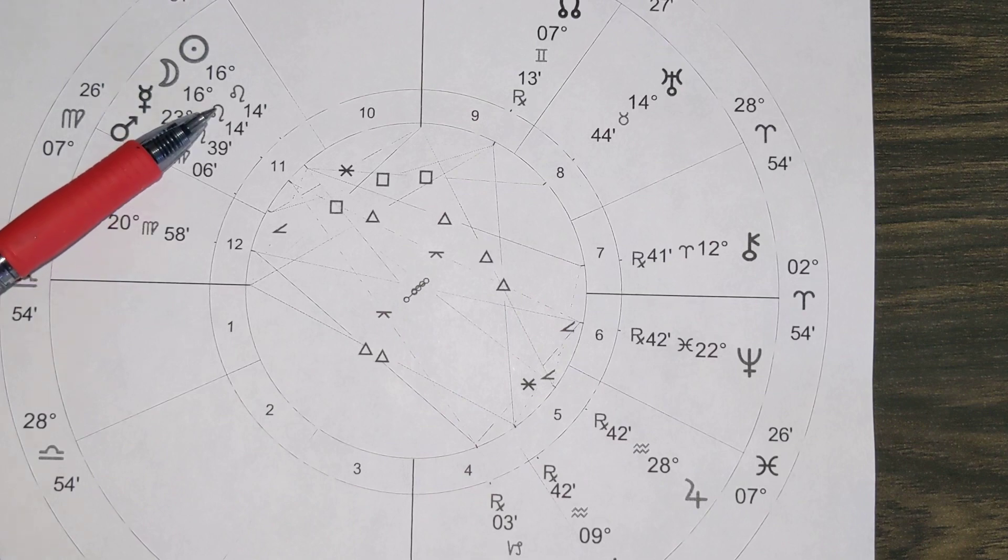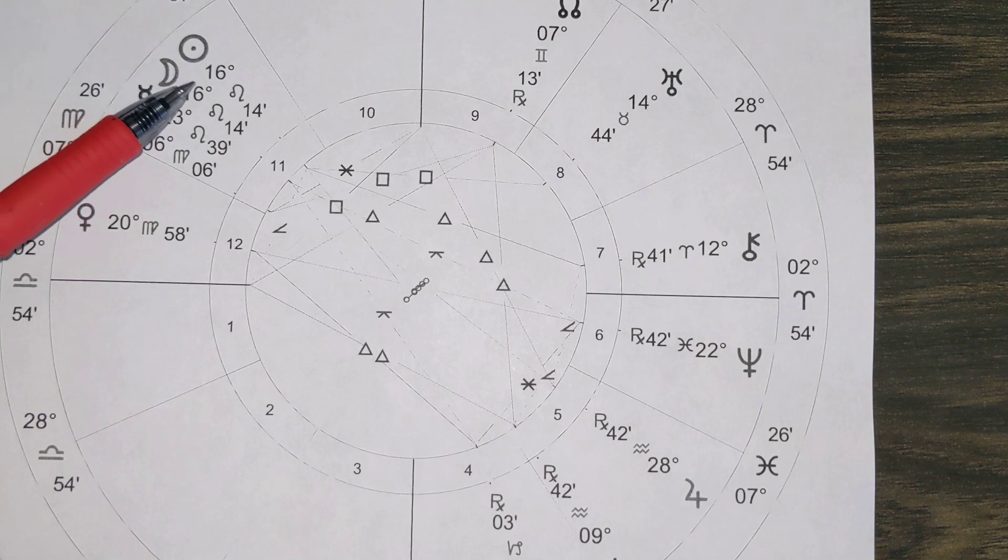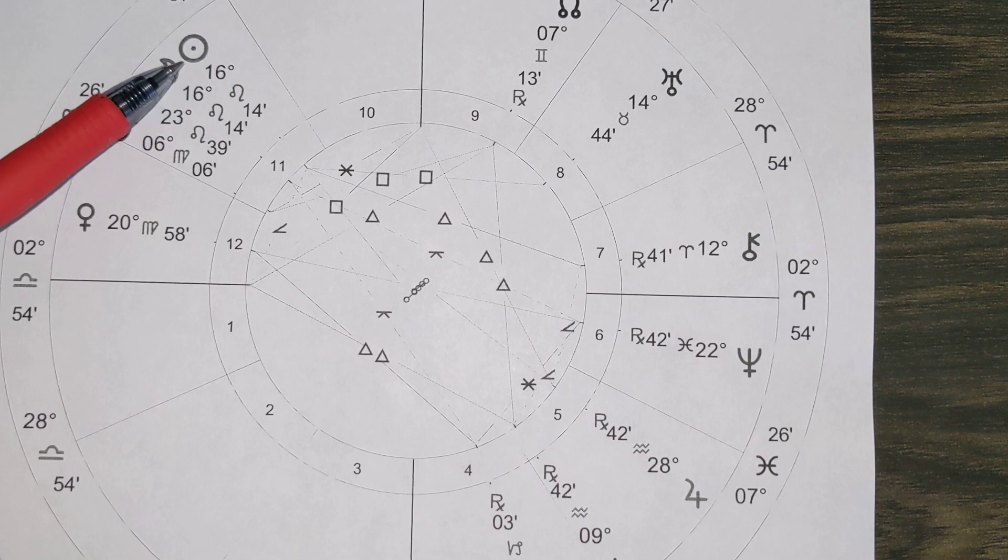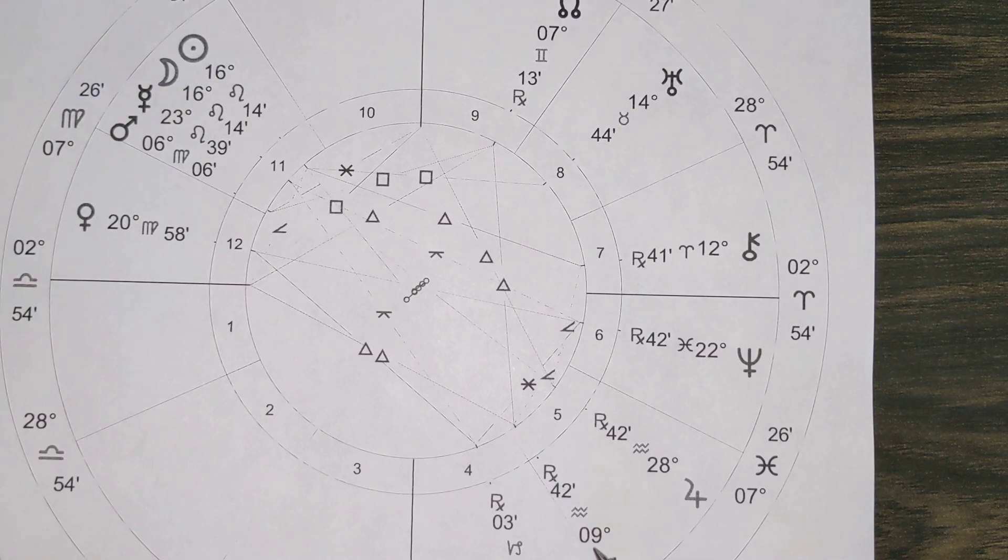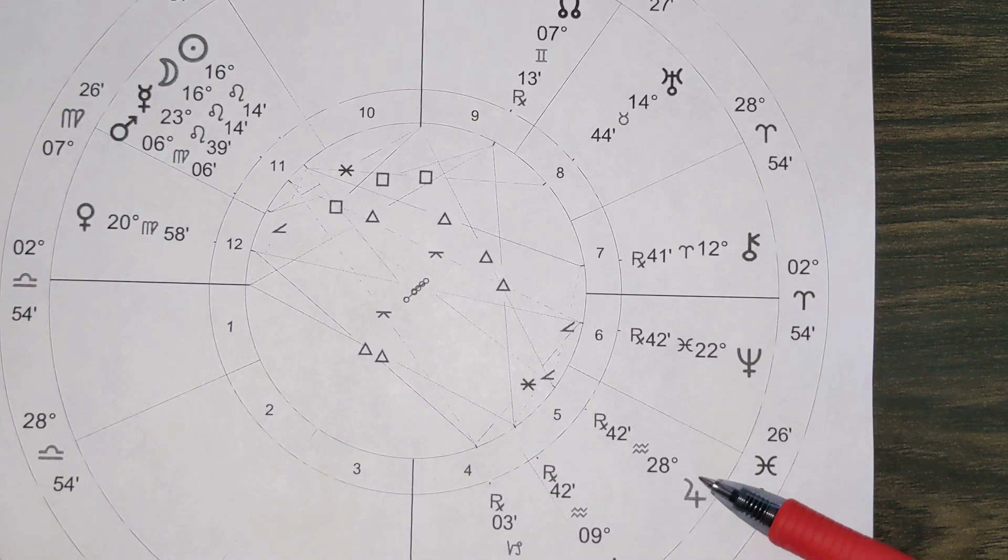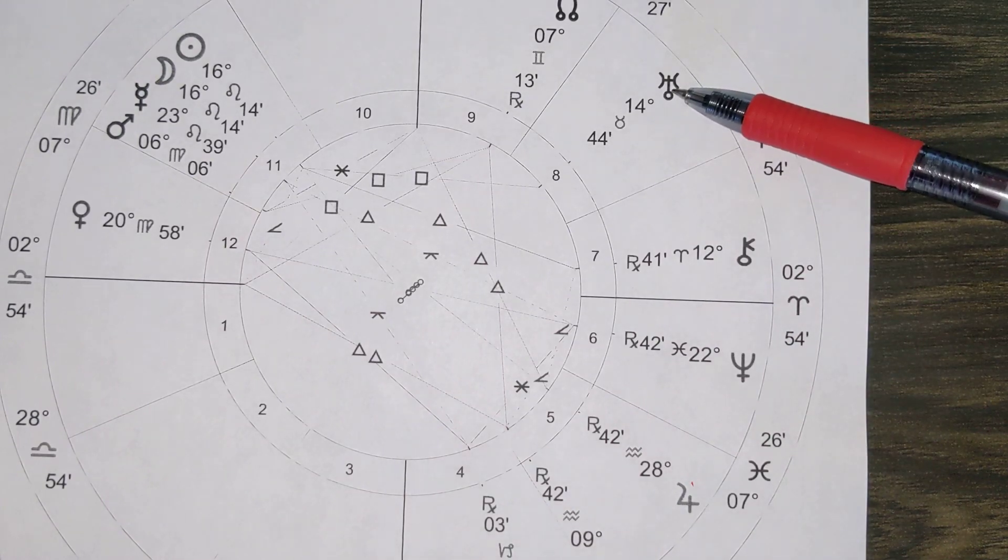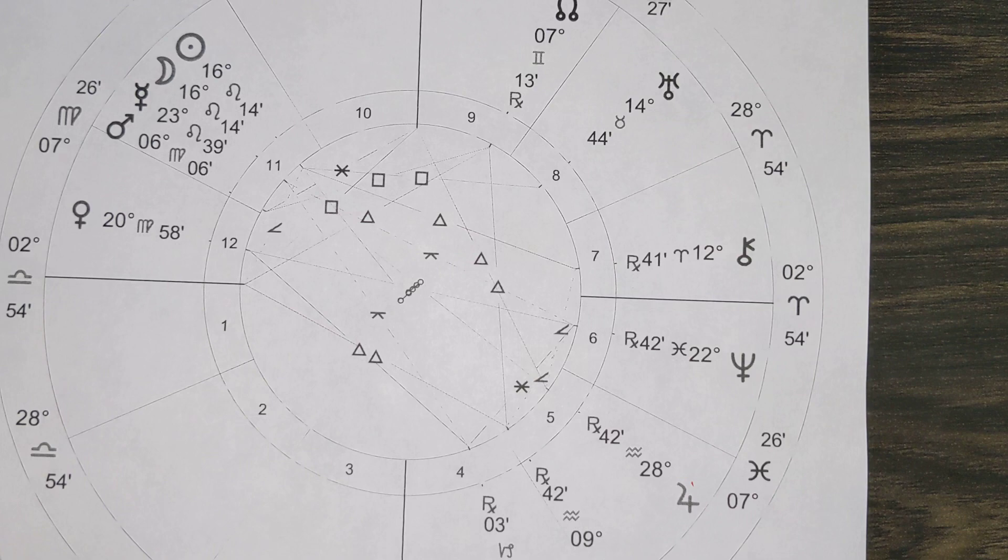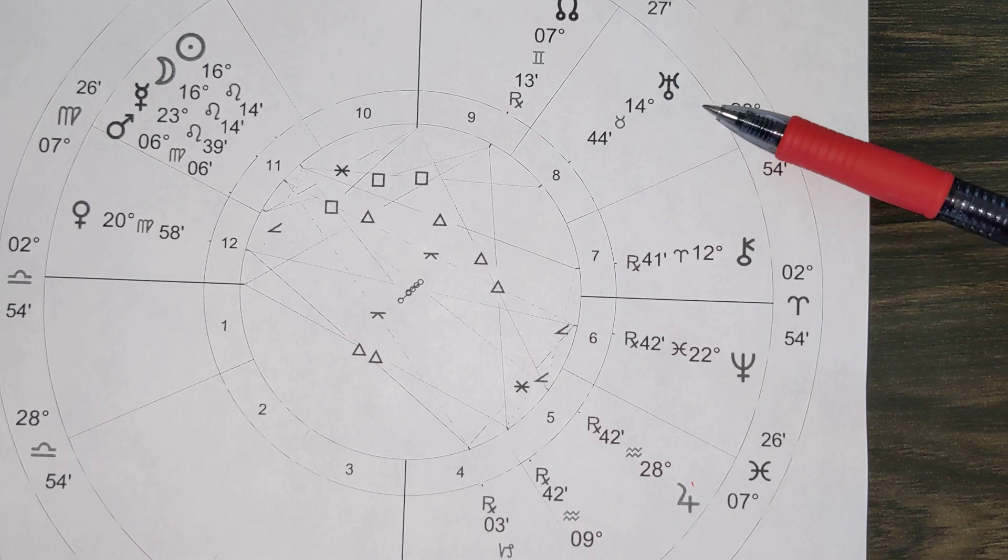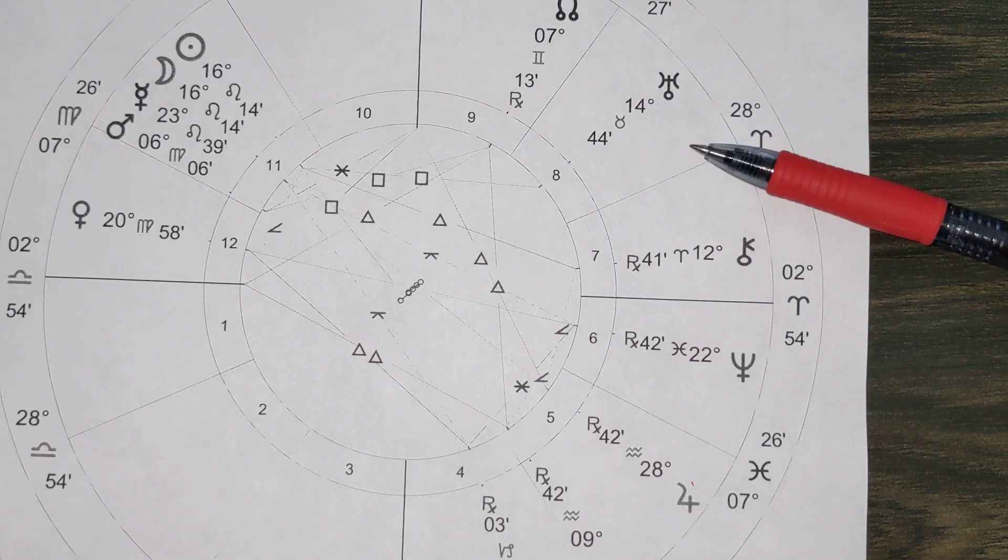And this Uranus working with the New Moon energies adds an unexpected flare and also shows you more of what you need and what you don't need. Now we have six planets in the fixed signs. So sun, moon, Mercury, and Leo, Saturn, Jupiter in Aquarius, Uranus in Taurus.